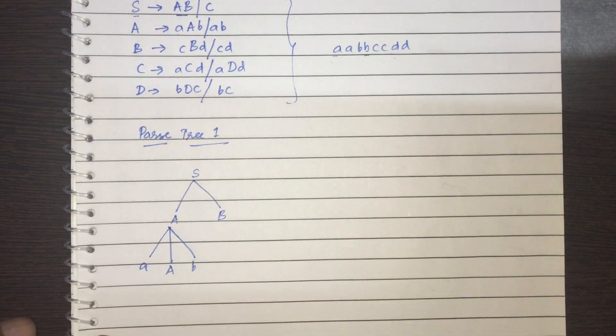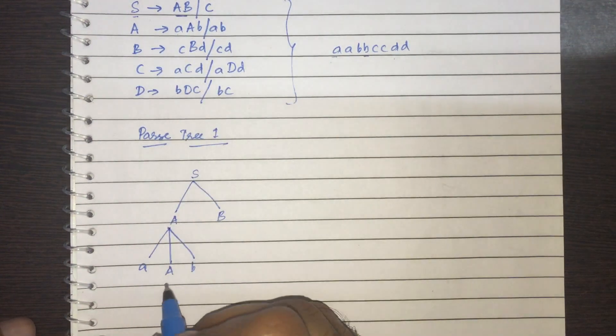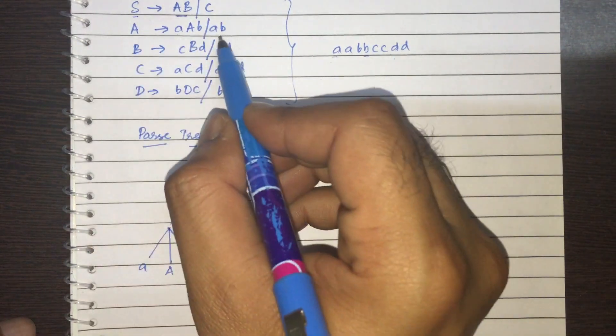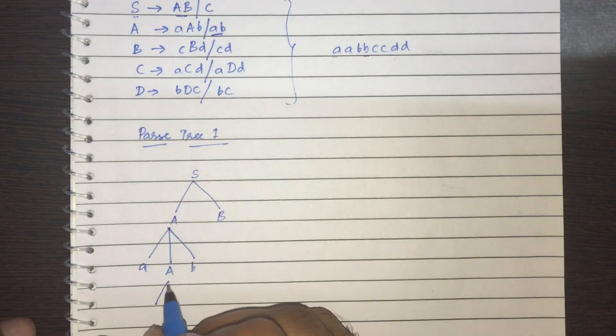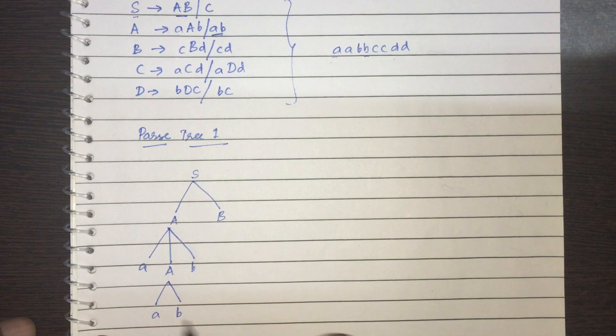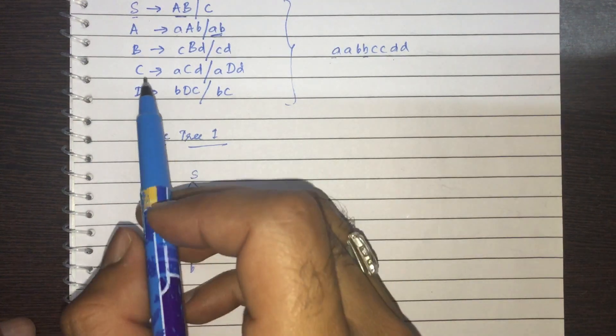So when I get this, I can actually, again, use the same production and use this A, B. And I got A, A and B, B.